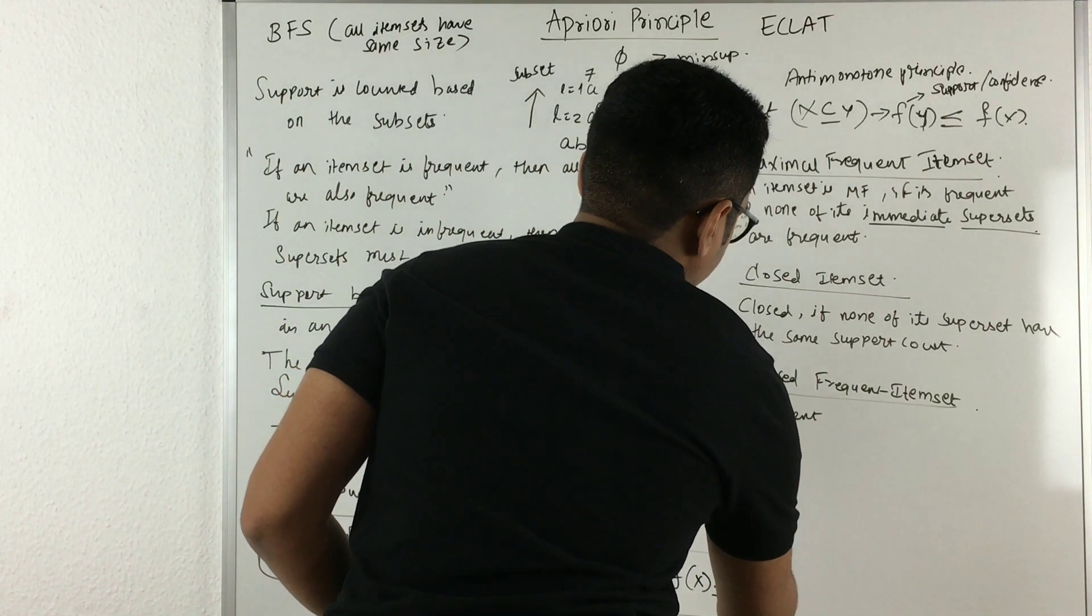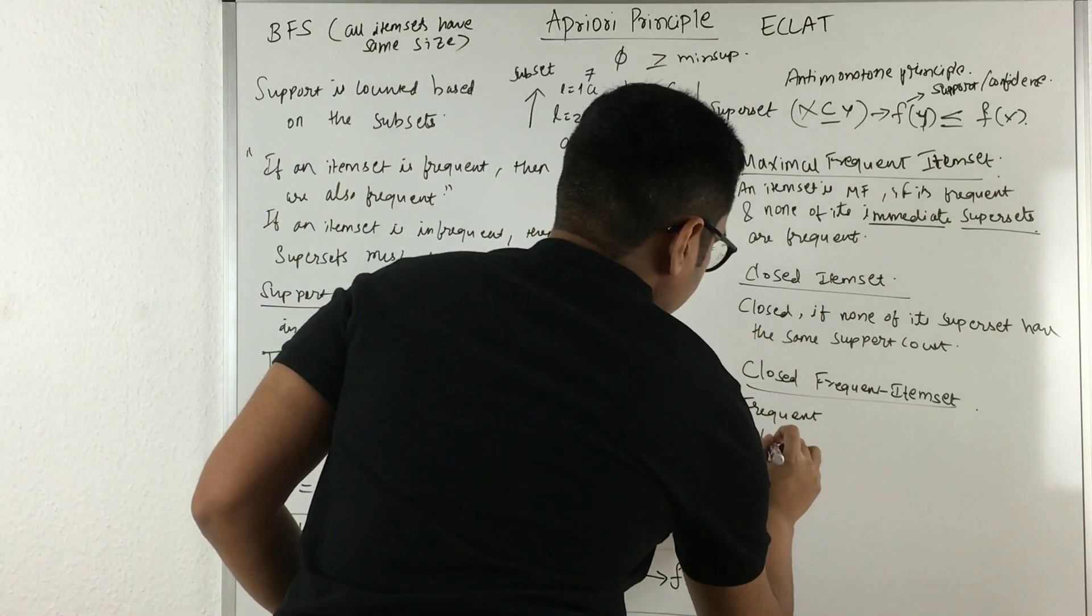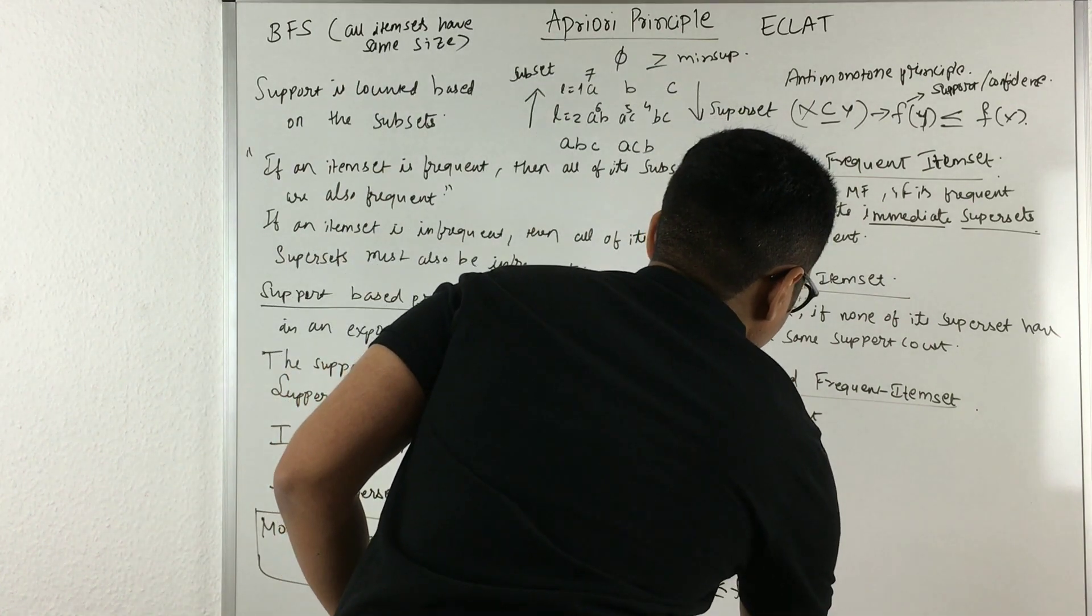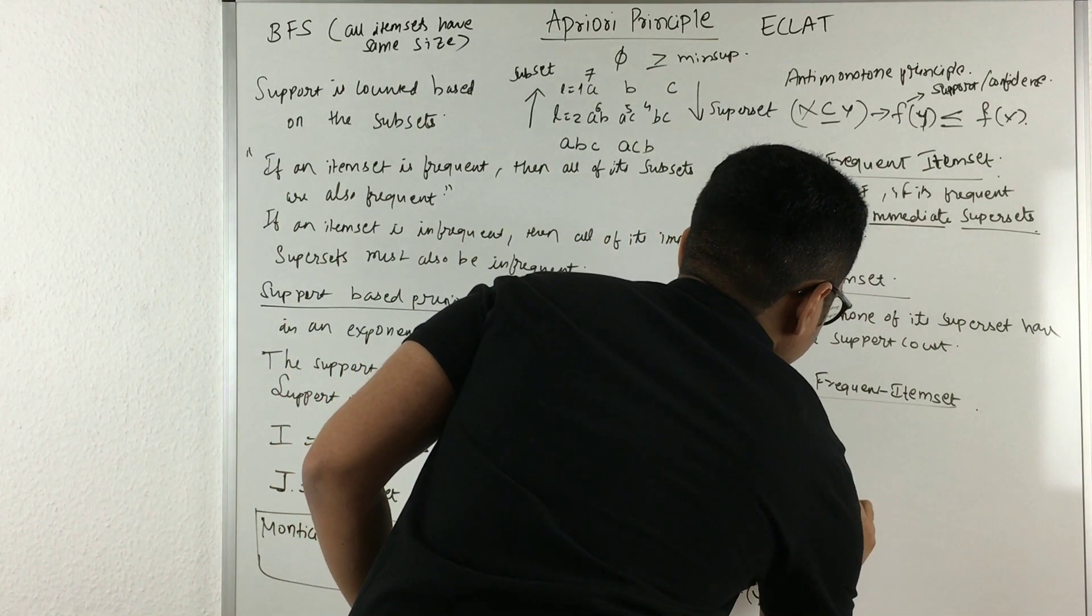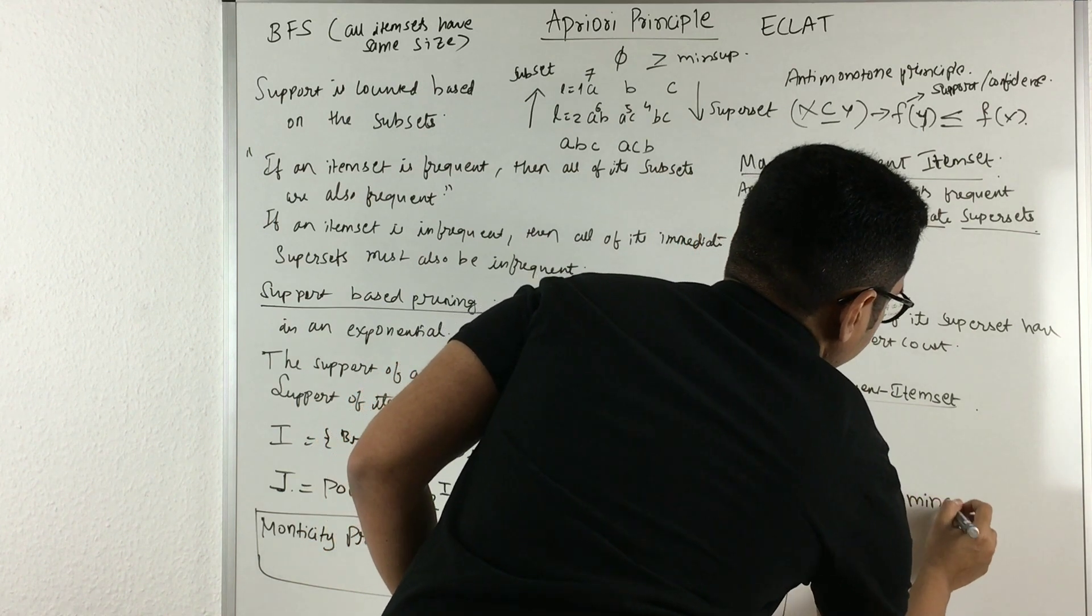That is the very first condition: it should be frequent. Second is that it should be closed. And the third qualifying condition is that its support is greater than or equal to the minimum support parameter.